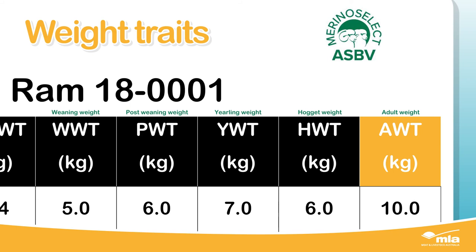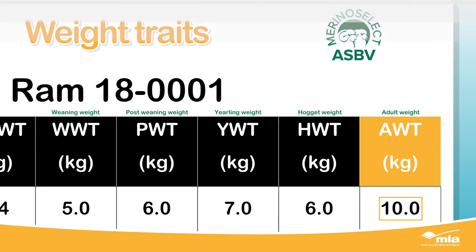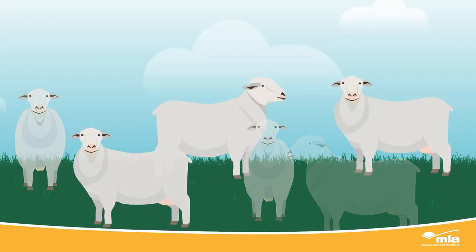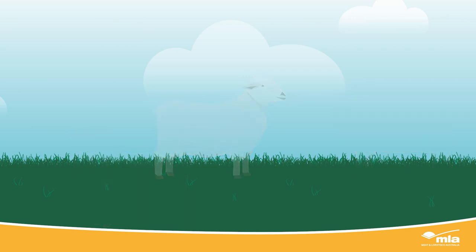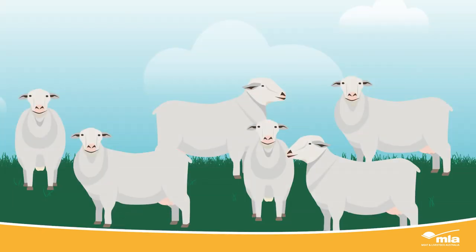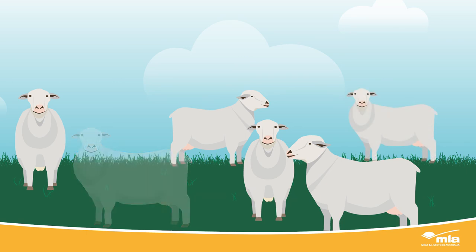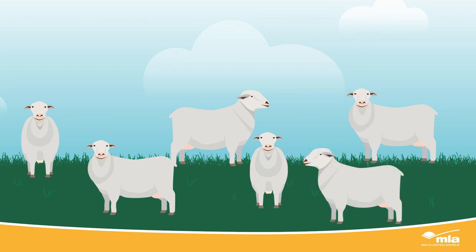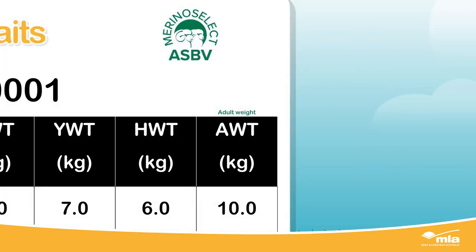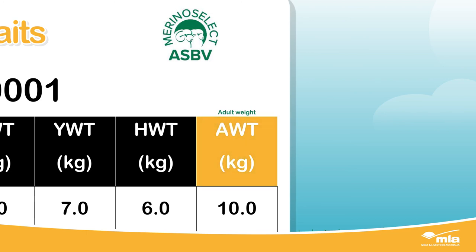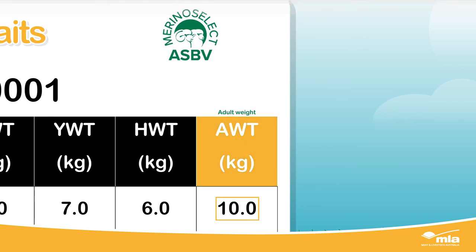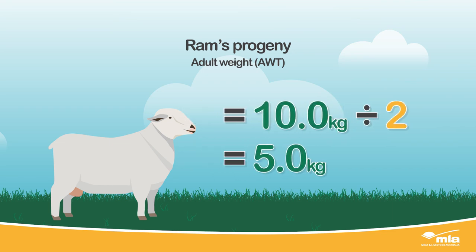Adult weight is also a trait where an optimum is desired depending on the production system. Terminal production systems where ewes are not retained are not concerned about adult weight, whereas self-replacing systems are conscious of ewe efficiency and prefer a balance between good early growth and mature ewe size. If you're measuring adult weight, a ram with an adult weight ASBV of 10 kilograms will produce progeny who are 5 kilograms heavier as adult sheep compared to a ram with an ASBV of zero.